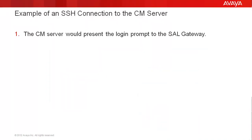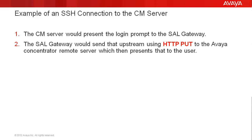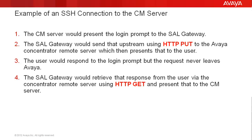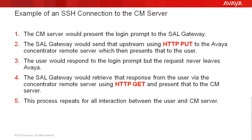For example, if this were an SSH connection, when the CM server presented the login prompt to the SAL gateway, the gateway using HTTP PUT would send that information upstream to the concentrator remote server, which in turn would present that login prompt to the end user's application. Similarly, when the user enters a username for the login prompt, that request never leaves Avaya. Rather, the gateway, now using HTTP GET, will retrieve that information from the concentrator remote server and then present that to the CM server. As the session moves on, the SAL gateway will continue to repeat this process for all interaction occurring between the user and the CM server, fulfilling each and every request.